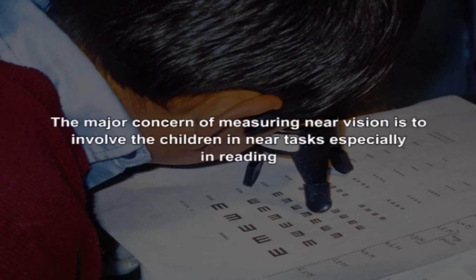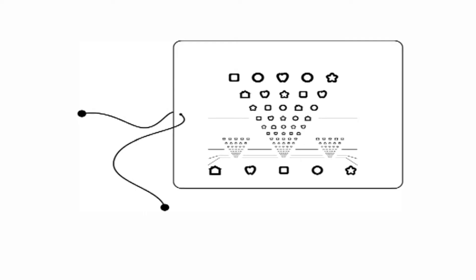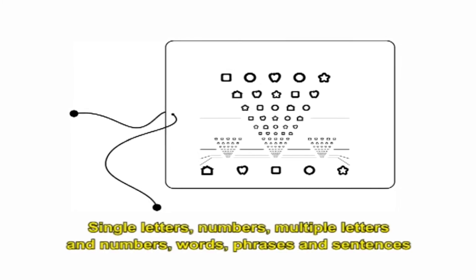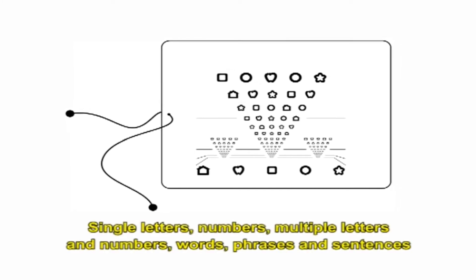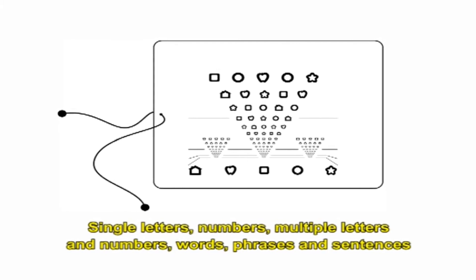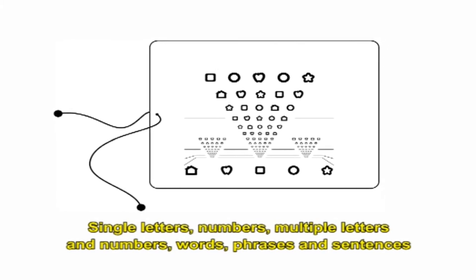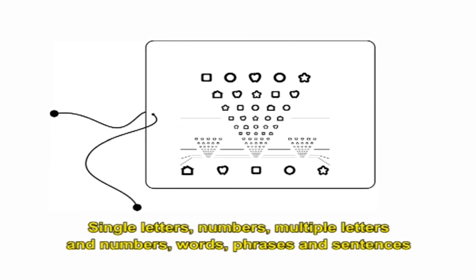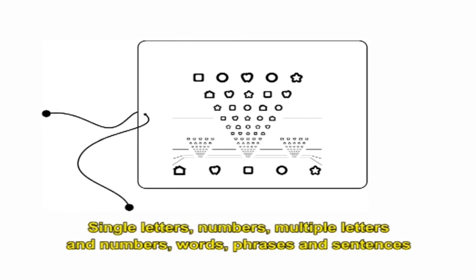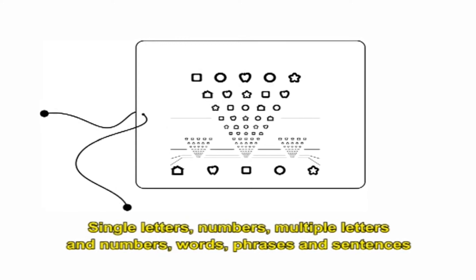The major concern for measuring near vision is to involve children in near tasks, especially reading. Numerous near vision charts are available with single letters, numbers, multiple letters and numbers, words, phrases, and sentences with varying levels of difficulty. A suggested starting point is a chart with single letters, words, or numbers.